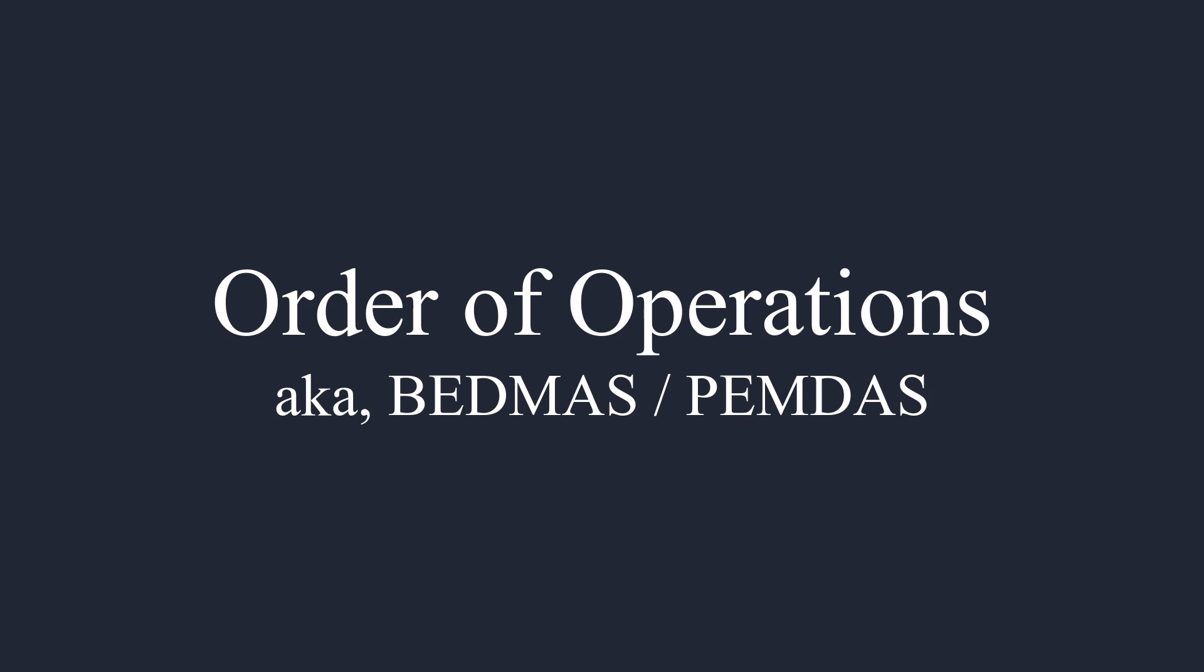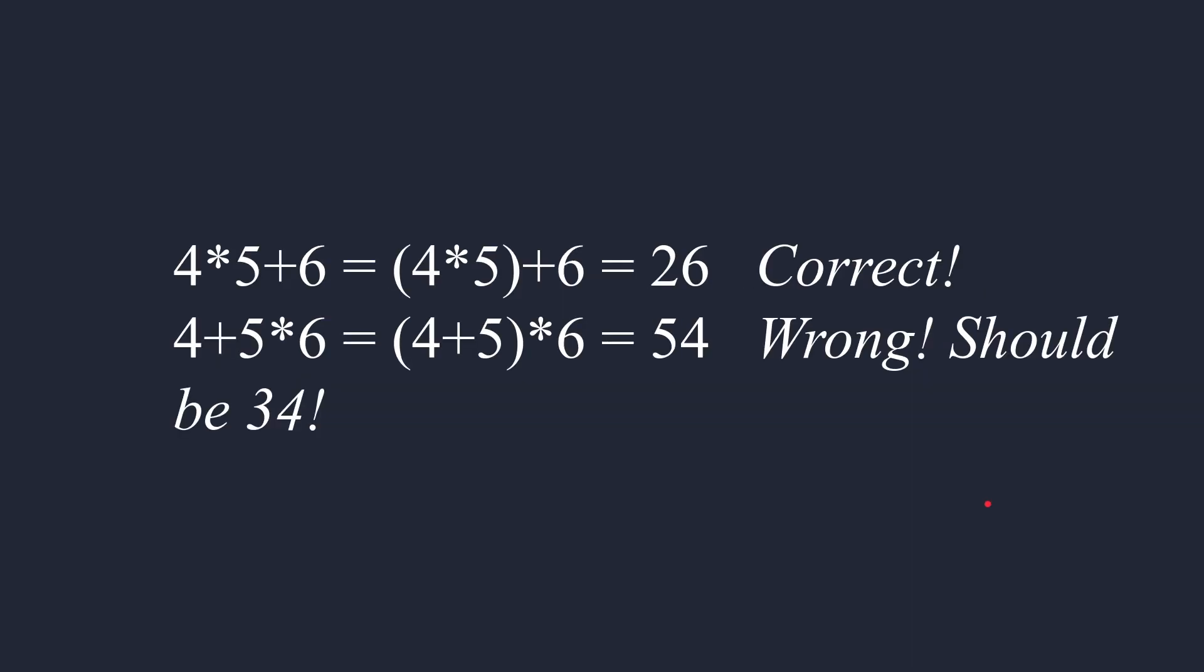But we will make the mistake here with order of operations, which you will remember from middle school as BEDMAS or PEMDAS, depending on where you learnt. Let's look at why. In the expression we just went through, 4 times 5 plus 6, we basically do the 4 times 5 first, and then we do the plus 6 and we get the correct answer, 26. But if it was 4 plus 5 times 6, well, then we'll end up doing the 4 plus 5 first instead of the times 6, which will give us the wrong answer. This should be 34, but we actually will get 54 because of our left to right scan method.